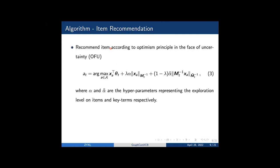The item recommendation policy is the optimism principle in the face of uncertainty, which is common in linear bandits. The alpha and tilded alpha are two hyperparameters representing the exploration strength on item and key term level respectively.